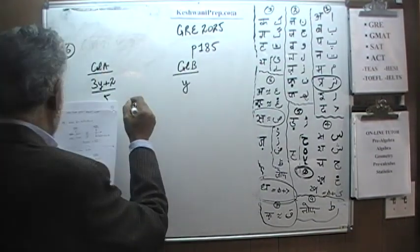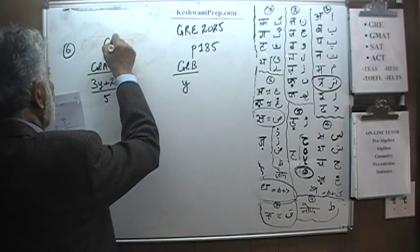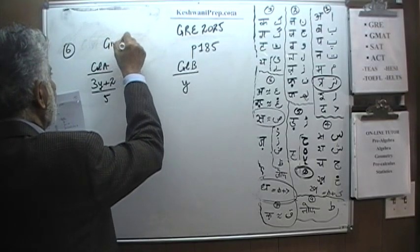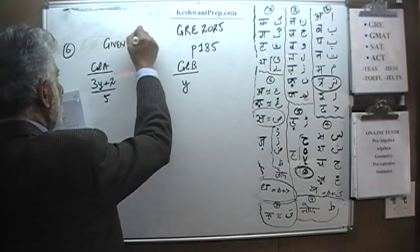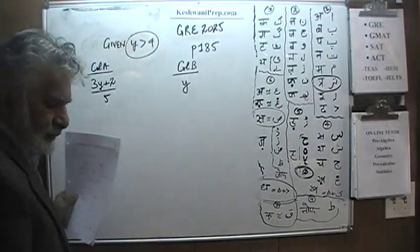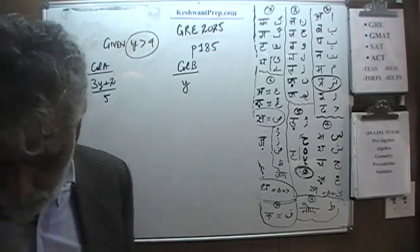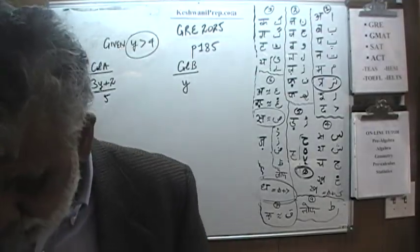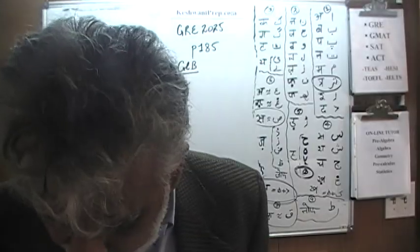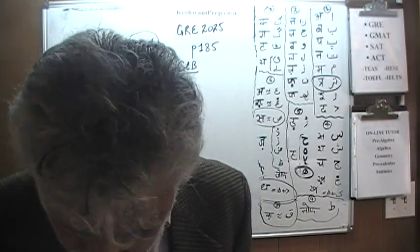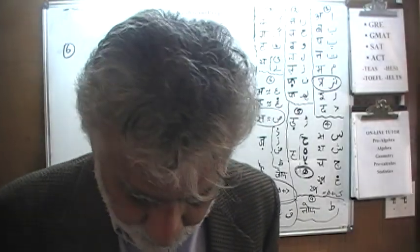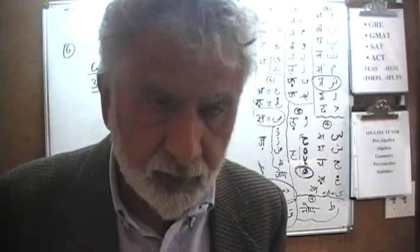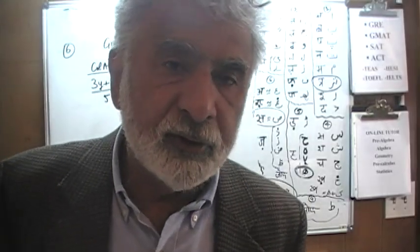We are told this part is given: that y is more than 4. That is given to us. We always have to pay attention to what is stated in the middle of the two columns. Whatever appears in the middle of the two columns is a given quantity — here, that y is bigger than 4.